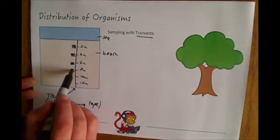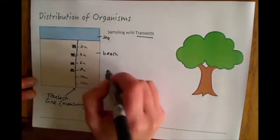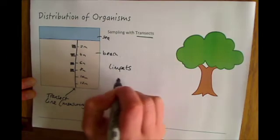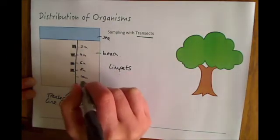So you're getting a pattern up the beach of how many organisms. You might look at something like limpets and examine the distribution of limpets along the shoreline.